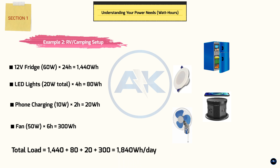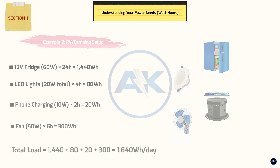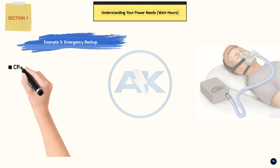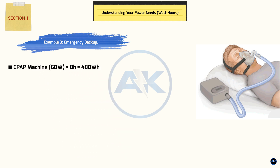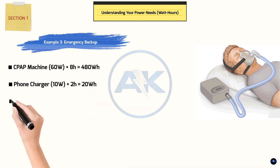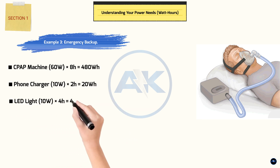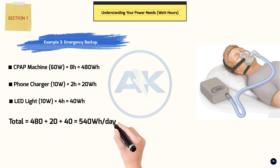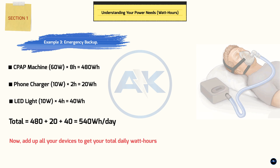Example 3: Emergency backup — basic needs. CPAP machine: 60 watts × 8 hours = 480 watt-hours. Phone charger: 10 watts × 2 hours = 20 watt-hours. LED light: 10 watts × 4 hours = 40 watt-hours. Total: 480 + 20 + 40 = 540 watt-hours per day. Now add up all your devices to get your total daily watt-hours.